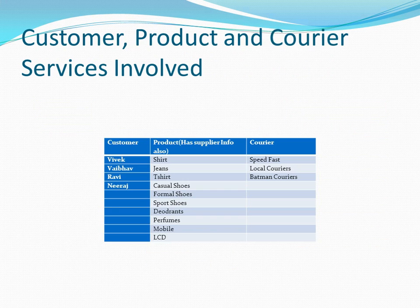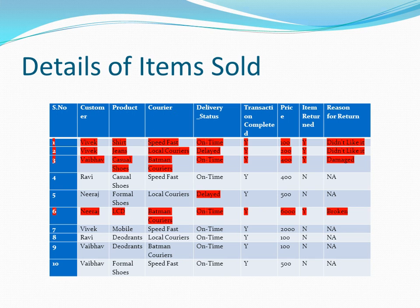Let's analyze the data. We have three entities — customers, products, and couriers — and these are the details of items sold over the last one month. We have certain components highlighted in red; these are the items that have been returned. An item that has been returned has made no profit for the company — rather, it has incurred losses. An item being returned means it was shipped and then sent back, making no profit for the company.